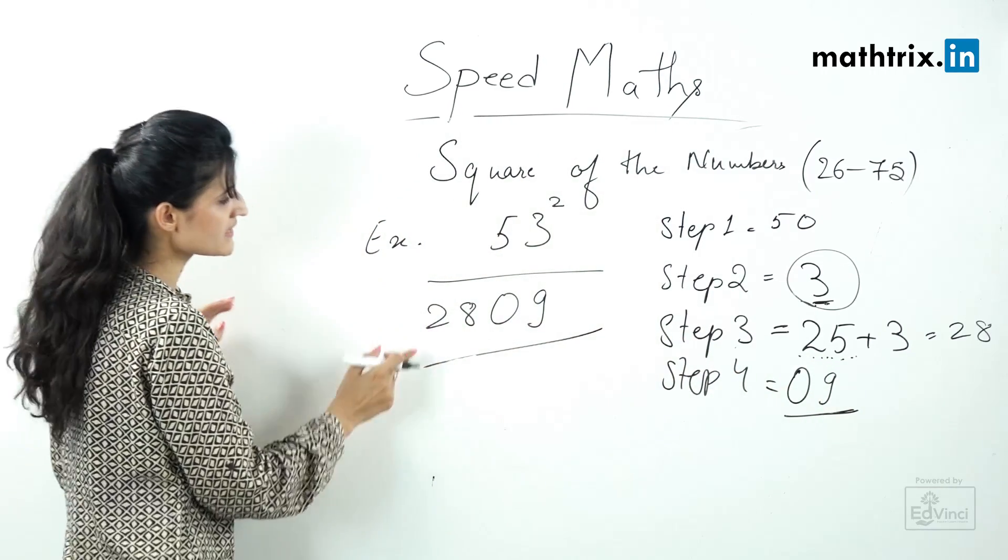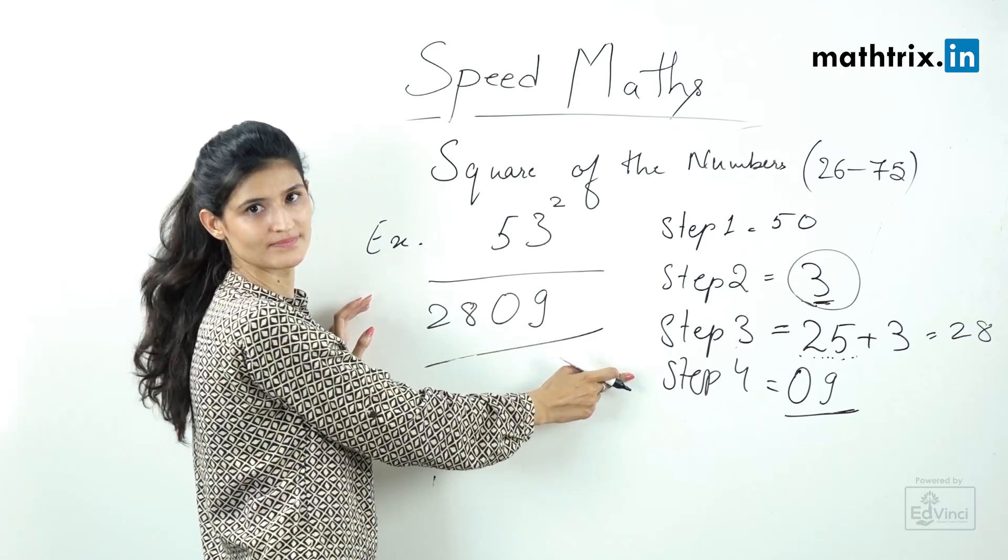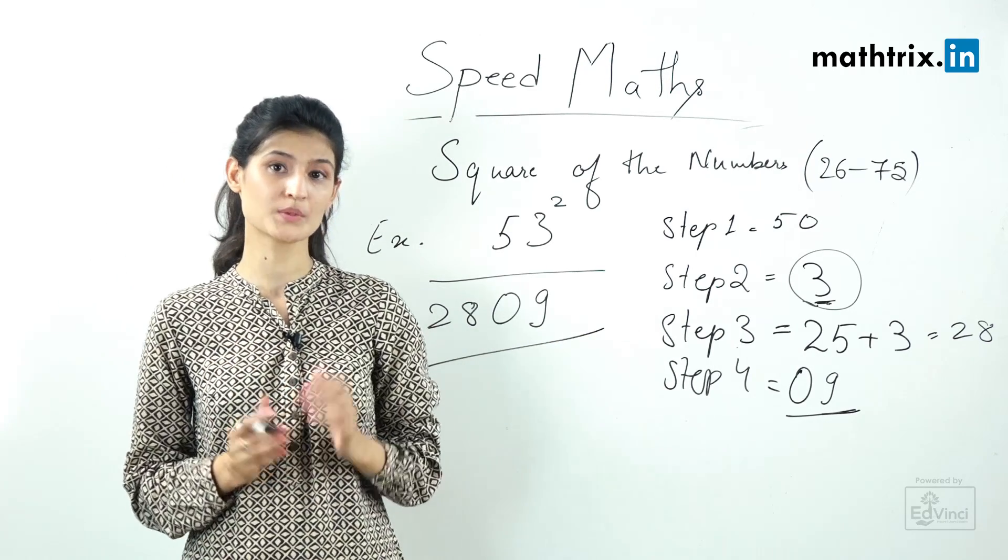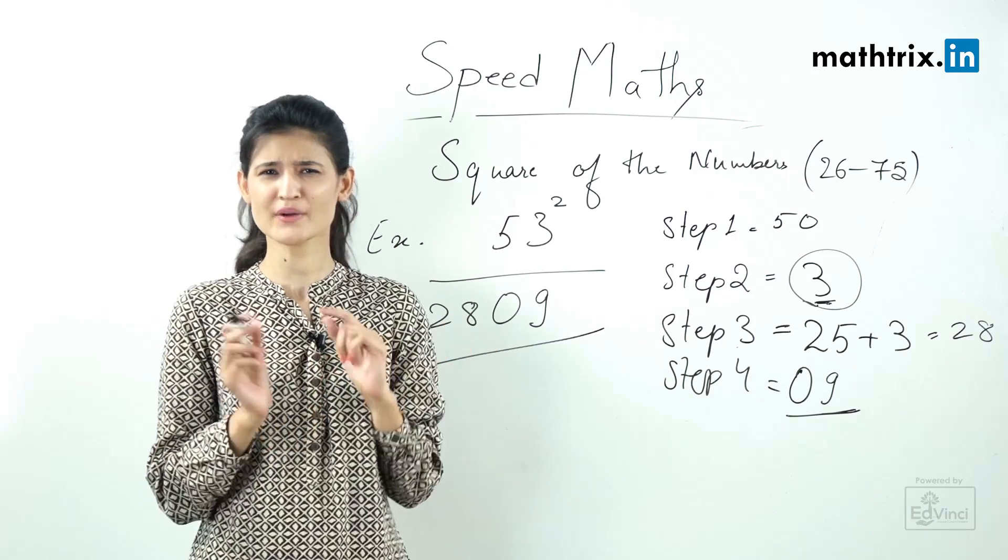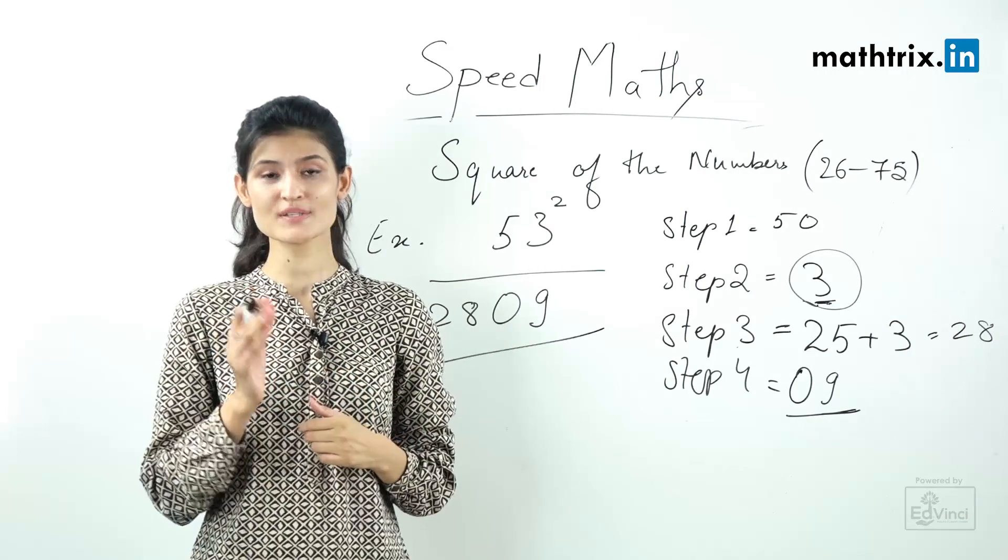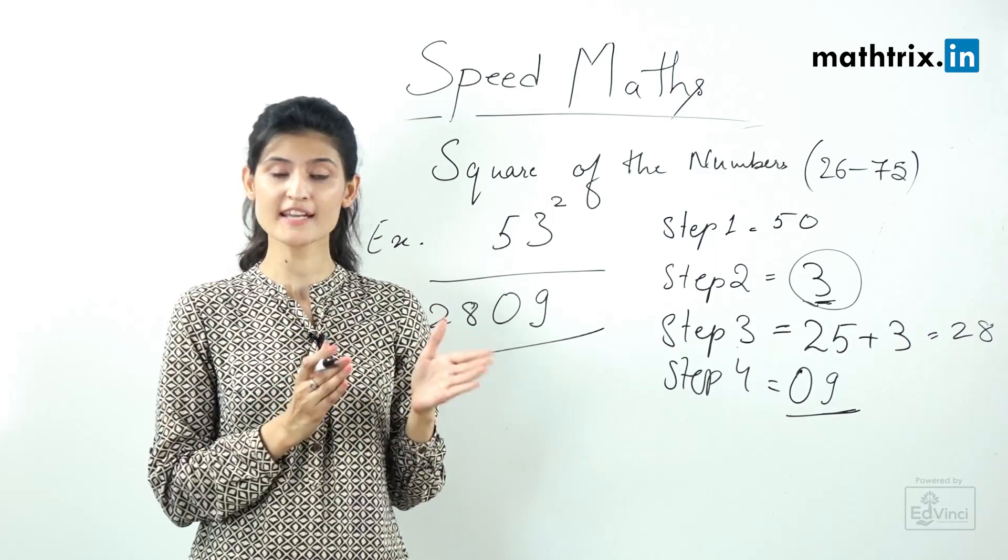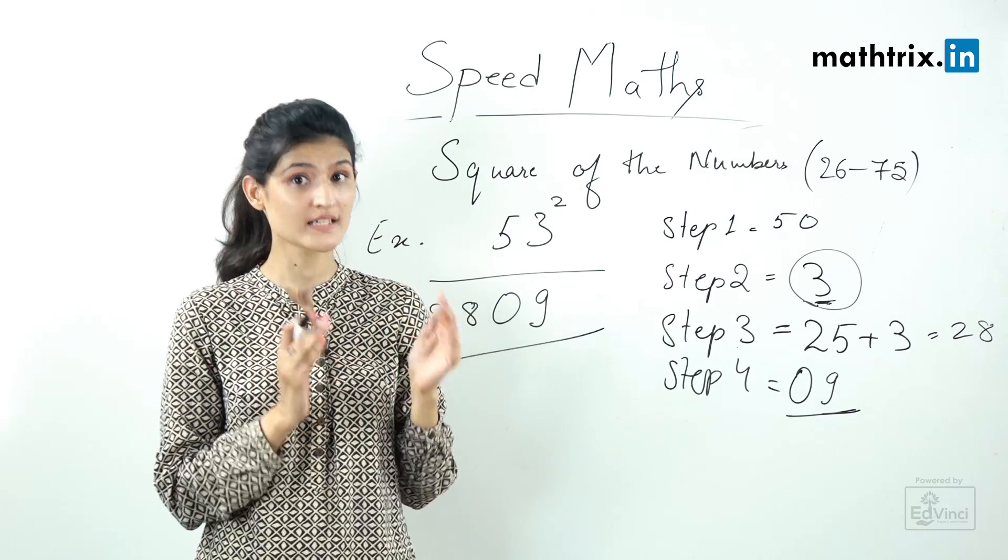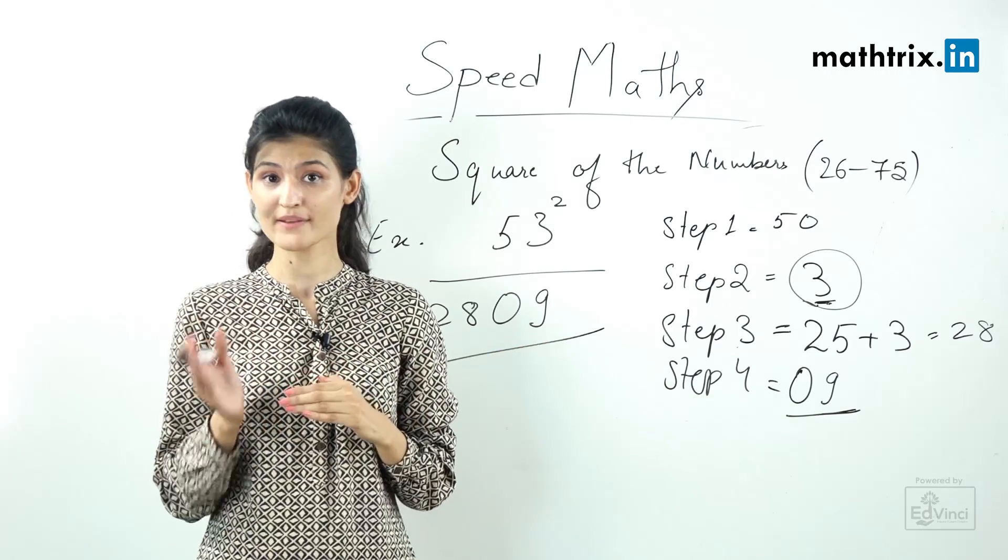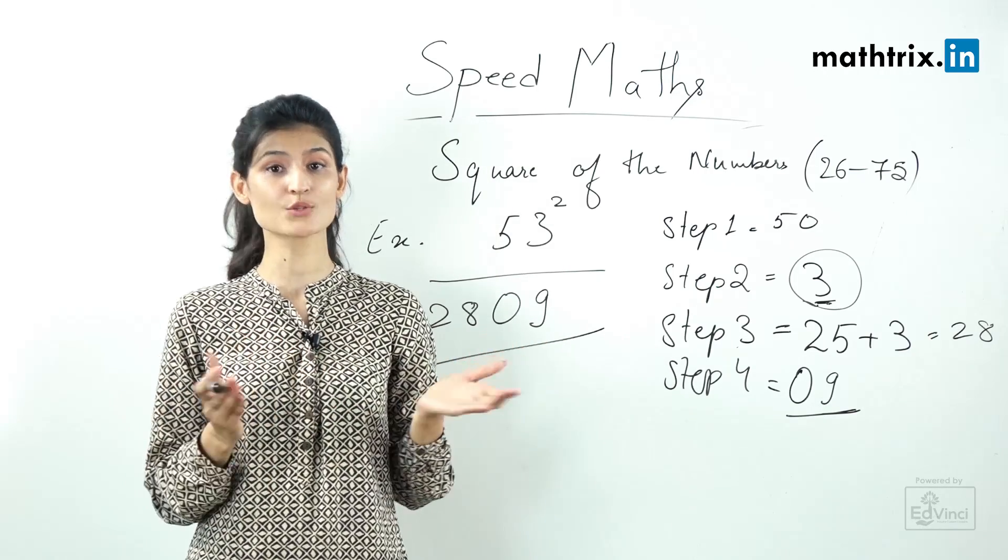Let's take another example which is 57. So let's square 57 and try to solve it verbally. So 7 is the difference with our base 50, and if we add it to 25 we're going to get 32. And what is 7 square? 49. So our answer is 3249. Isn't it easy?